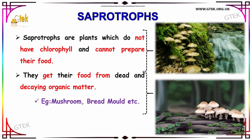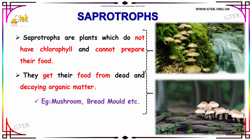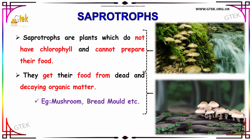Now we are going to see about saprotrophs. Saprotrophs are plants which do not have chlorophyll and cannot prepare their own food, so they get their food from dead and decaying organic matter. Well-known examples of saprotrophs are mushroom and bread mold. Since they cannot prepare their own food, they obtain it from dead and decaying organic matter.